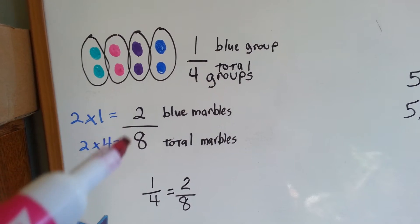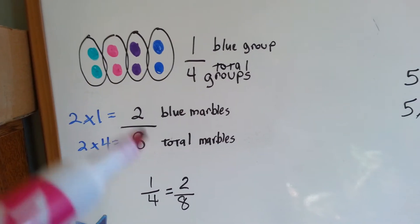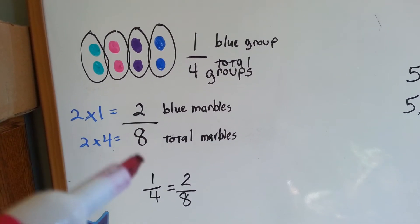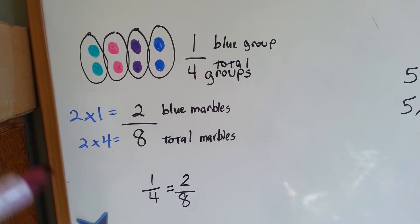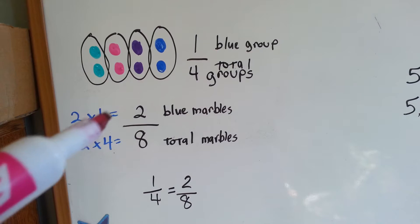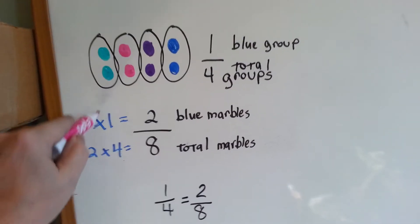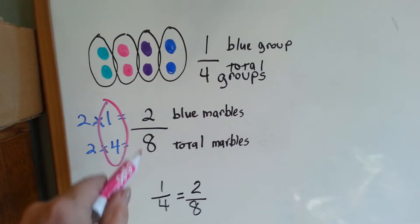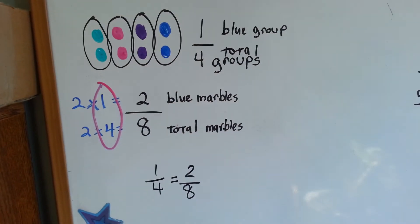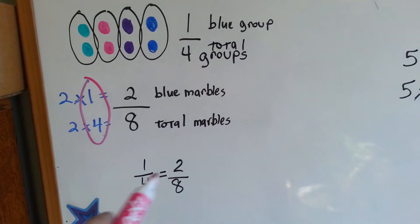Two blue marbles out of a total of eight marbles is two-eighths. One-fourth is equal to two-eighths. Look, two times one equals two. Two times four equals eight. Here's our one-fourth. It's how many times two can fit into the eight. So these are equivalent fractions.